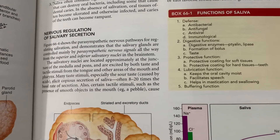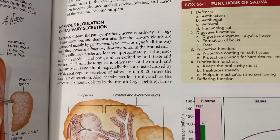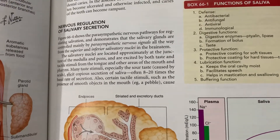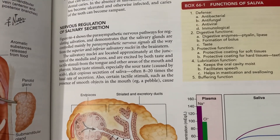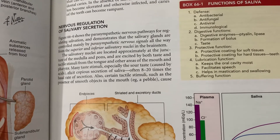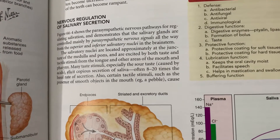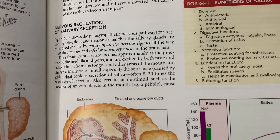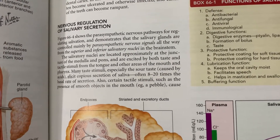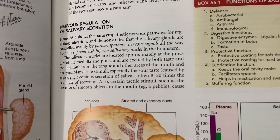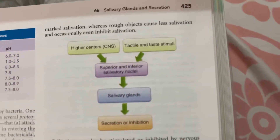This is the parasympathetic nervous connection. These salivatory nuclei are excited by both taste and tactile stimuli from the tongue and other areas of the mouth. Many taste stimuli, especially sour taste caused by H⁺ ions or acids, elicit copious secretions of saliva. Also, certain tactile stimuli such as the presence of smooth objects in the mouth like a pebble can cause marked salivation.